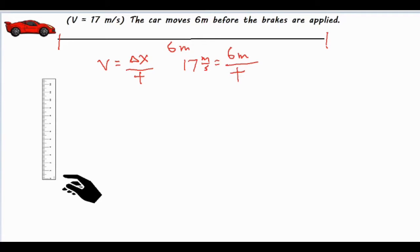And we have the t on the bottom, which is what we're looking for. So for this particular calculation, it's basically just cross multiplying these two numbers and then the t pops up on the other side. Then we have 6 divided by 17, which equals 0.35 seconds.